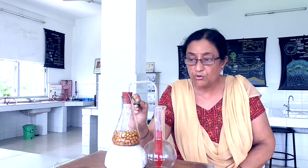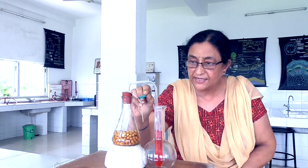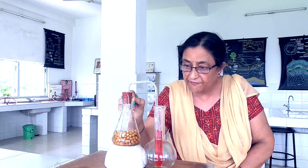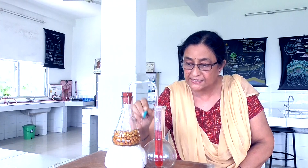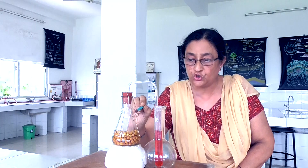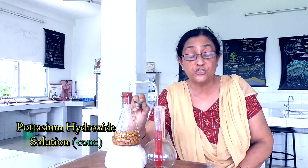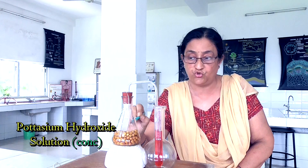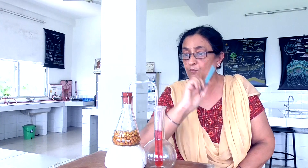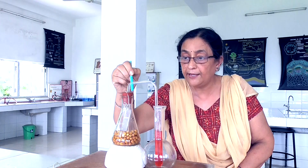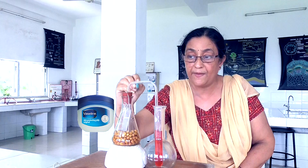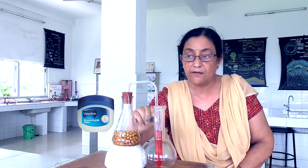One more thing you can see children — here you can see a thread, and with the help of this thread we have kept a small test tube inside the conical flask. In this small test tube, we are keeping potassium hydroxide solution — it is a concentrated solution. This is the experimental setup, and at this edge we apply Vaseline to make this apparatus airtight.